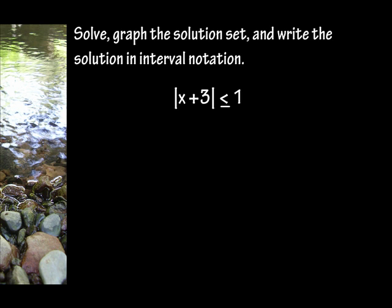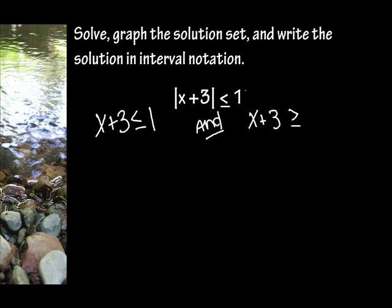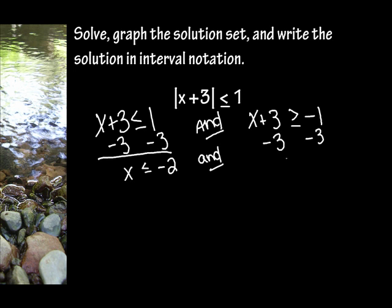Solve, graph the solution set, and write the solution in interval notation. I'm going to rewrite this as x plus 3 is less than or equal to 1 — the original without the absolute value symbols. And x plus 3 is greater than or equal to — now this sign just changes direction, and this becomes the opposite — negative 1. Now I'm going to solve just like this was an equal sign. I'm going to subtract 3 from both sides, so x is less than or equal to 1 minus 3, which is negative 2. And, once again, subtract 3 from both sides, so x is greater than or equal to negative 4.